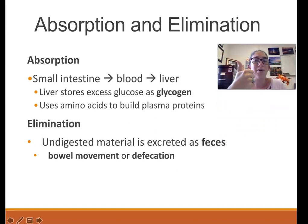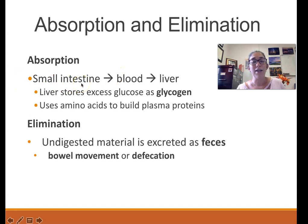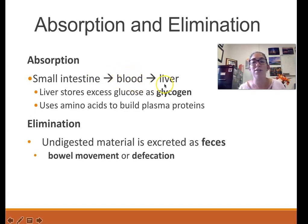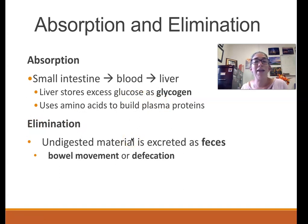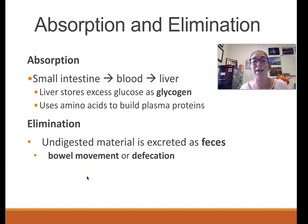Digestion is the first important function of the GI tract. Absorption is done mostly by the small intestine — absorbed nutrients go through the cell lining into blood vessels and straight to the liver, which decides where to send them. Elimination is the process of getting rid of waste — the more technical terms for waste are stool or feces, and the technical terms for the process are bowel movement (sometimes abbreviated BM) or defecation, literally meaning the process of getting rid of feces.